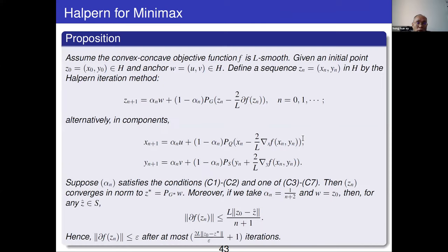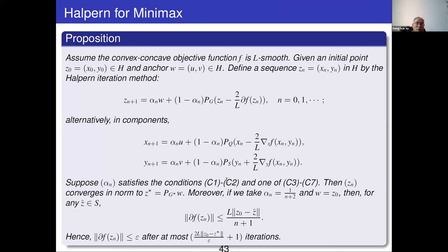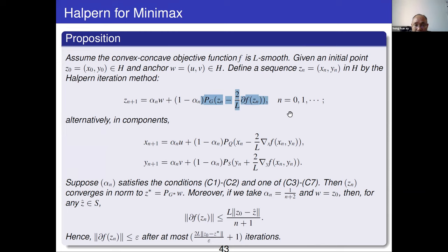We can apply Halpern to minimax because the convex-concave minimax problem is equivalent to a variational inequality, which is in turn equivalent to a fixed point problem. Applying Halpern to that fixed point operator — using a coefficient 2/L so that the operator is non-expansive — we obtain the corresponding Halpern-type algorithm.